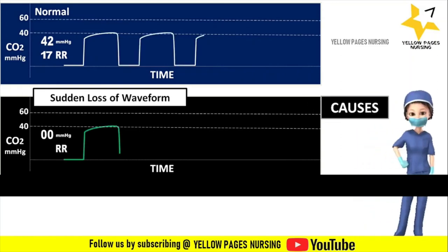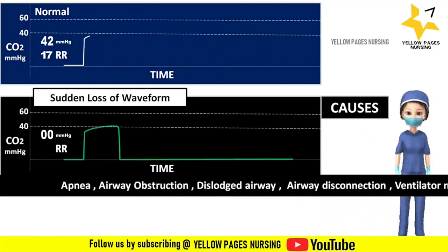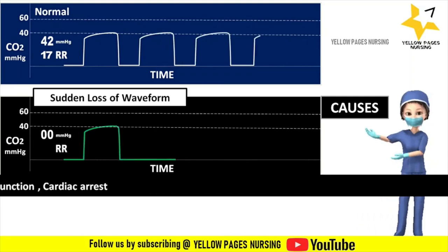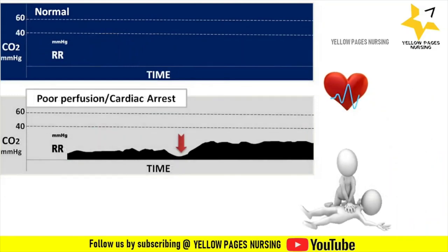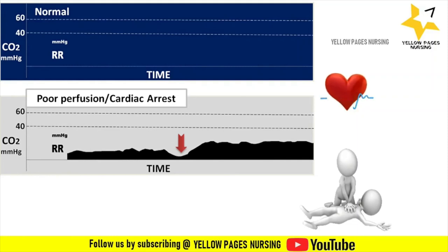Sudden loss of waveform indicates complete loss, meaning no carbon dioxide is present. This may be due to apnea, airway obstruction, dislodged airway, airway disconnection, ventilator malfunction, or cardiac arrest. The cardiac arrest or poor perfusion waveform shows a 30-minute trend of capnography indicating perfusion during CPR and effectiveness of resuscitation. A trough in the capnogram is formed when the first rescuer takes hands off and the second rescuer takes over compressions.